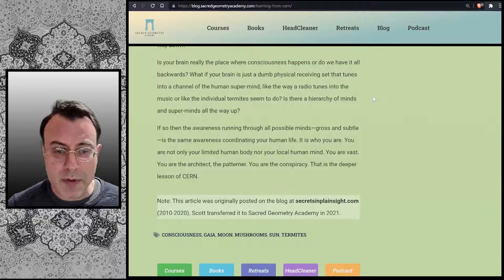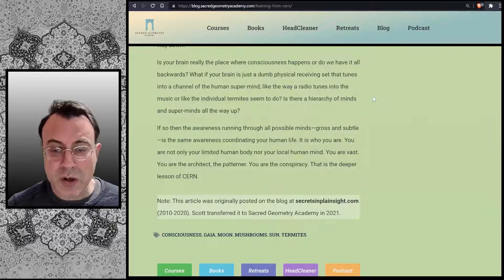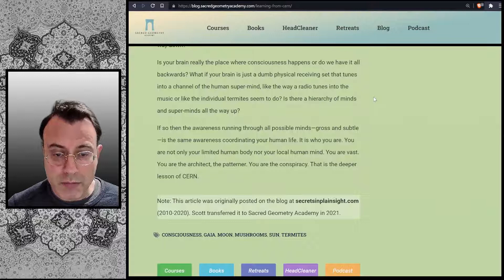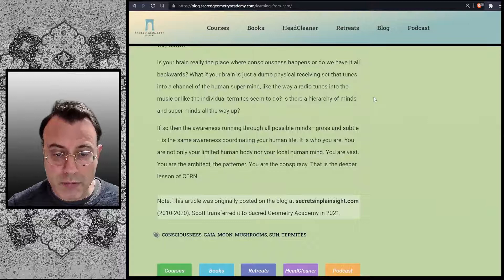Is there a hierarchy of minds and superminds all the way up? If so, then the awareness running through all possible minds, gross and subtle, is the same awareness coordinating your human life. It is who you are. You are not only your limited human body nor your local human mind. You are vast. You are the architect, the patterner. You are the conspiracy. That is the deeper lesson of CERN.